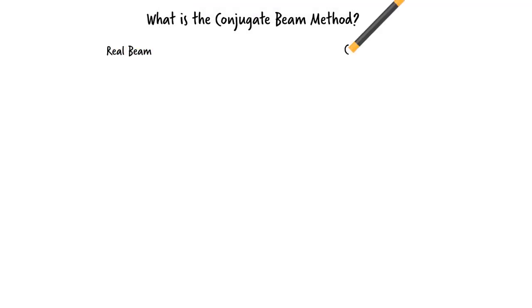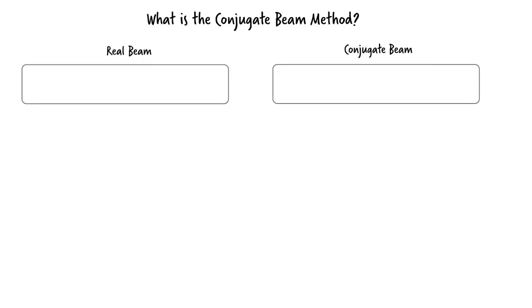The basic idea is to convert the real beam to an equivalent conjugate beam by changing the beam segment's boundary conditions. How do we do this conversion?